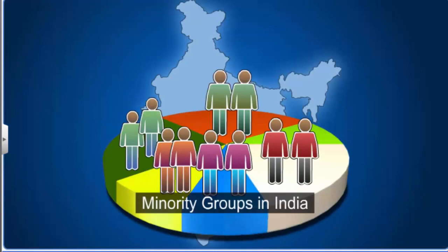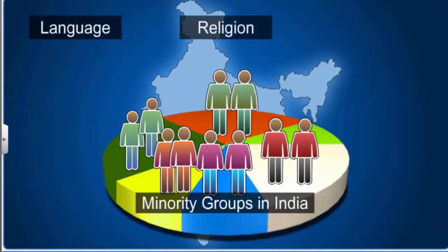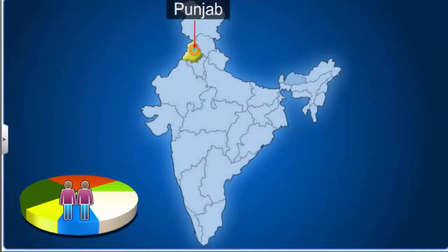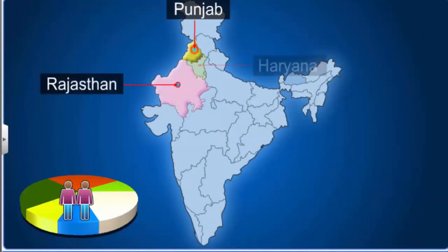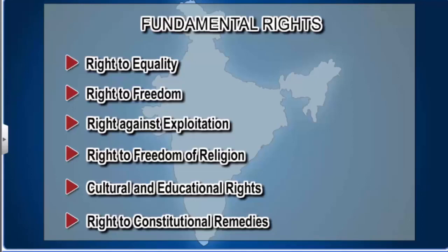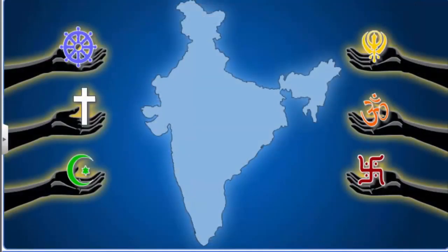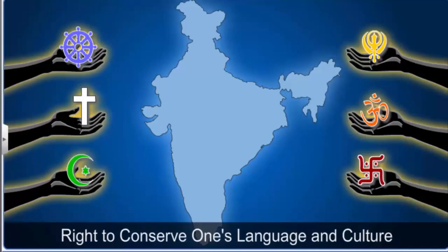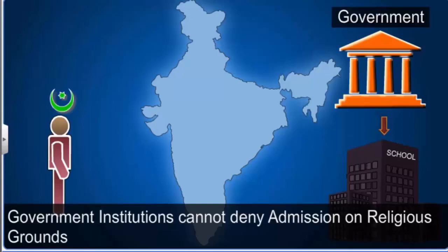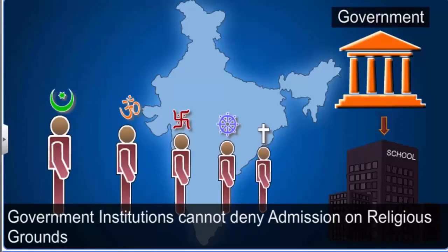Minority groups in India can feel neglected or undermined under the impact of language, religion and culture of the majority. For example, Sikhs are a majority in Punjab but a minority in other states such as Rajasthan, Haryana or Delhi. Therefore, to protect the interests of the minority groups, the constitution of India has laid down the fifth fundamental right which speaks about the cultural and educational rights of minorities. Every section of citizens with a distinct language or culture has the right to conserve it. Any educational institution run by the government or receiving grants from the government cannot deny admission to any citizen on the grounds of religion or language. Every minority community has the right to establish and administer an educational institution of their choice.